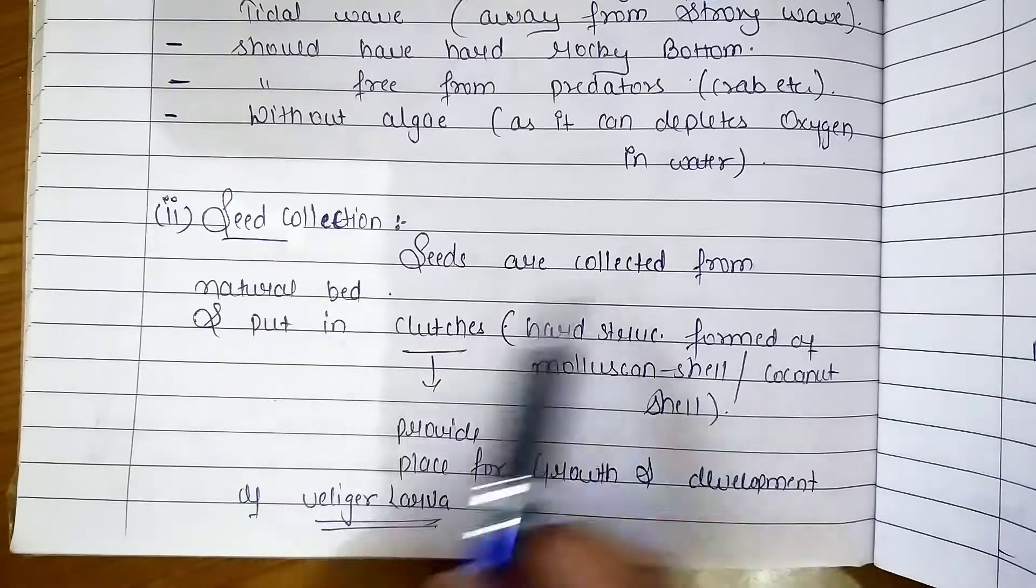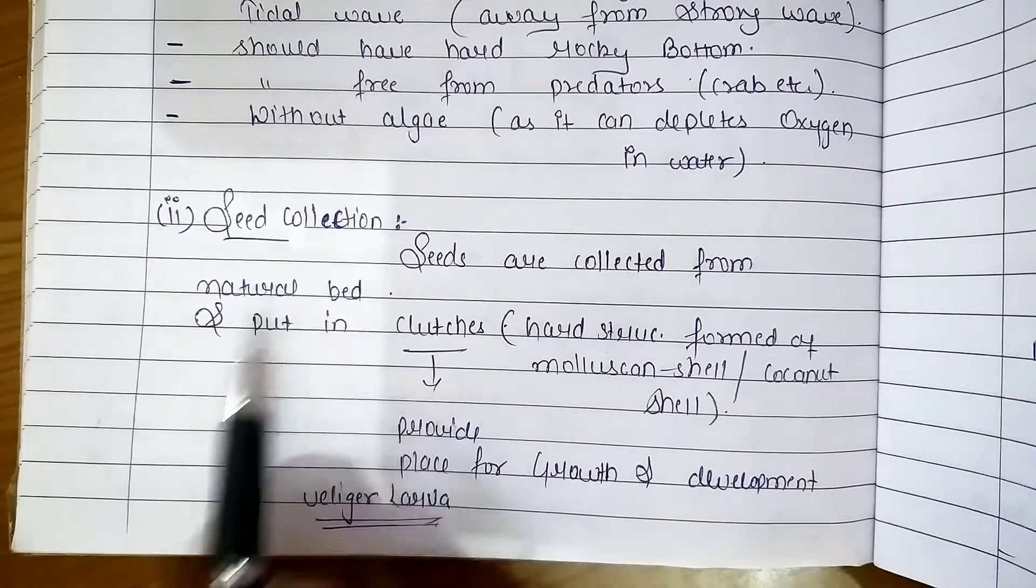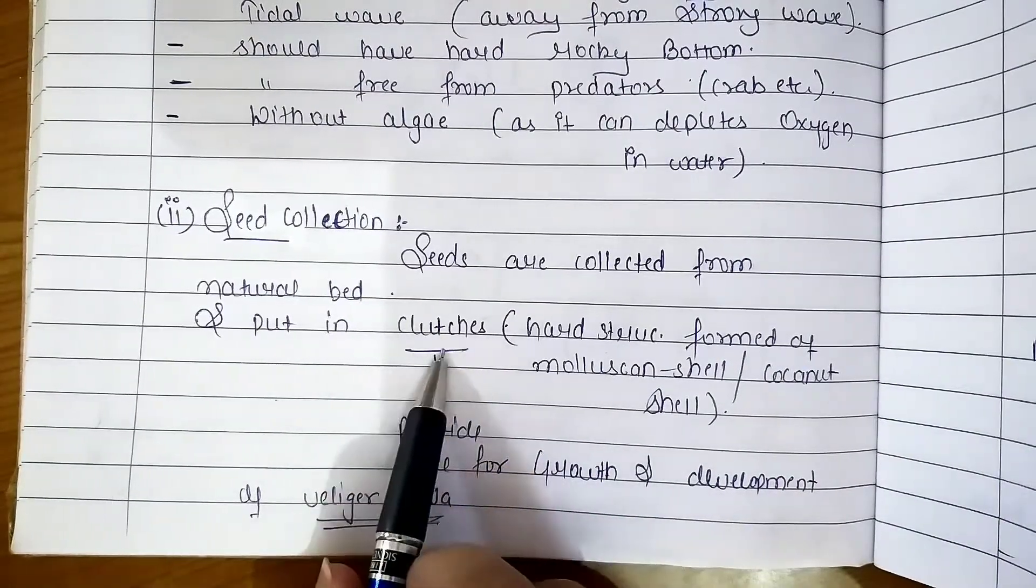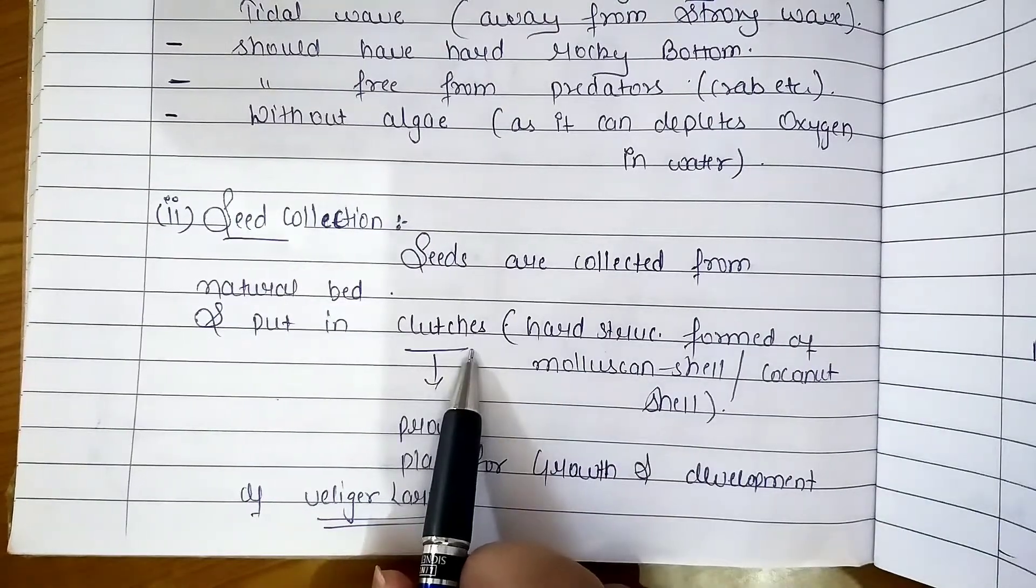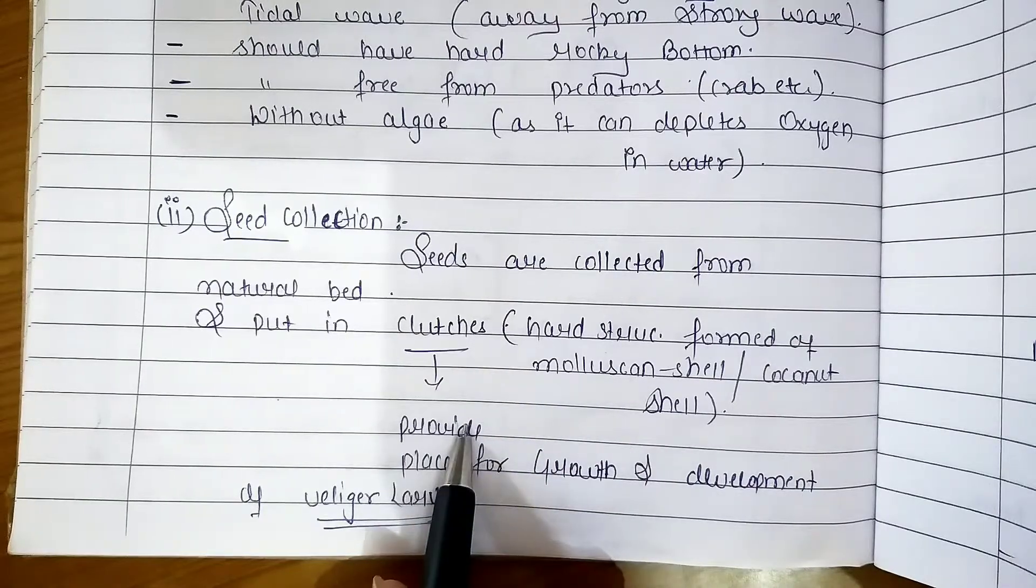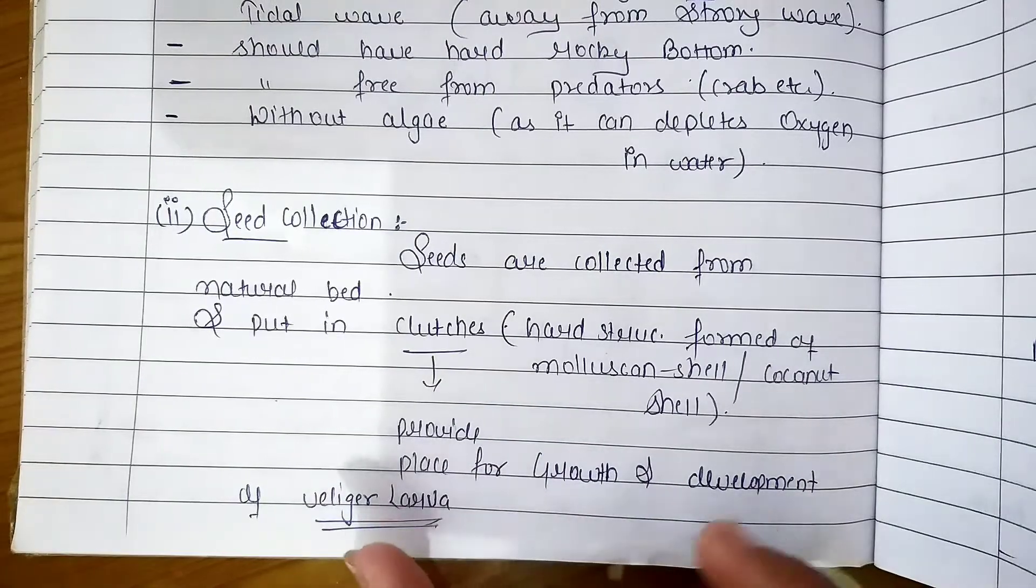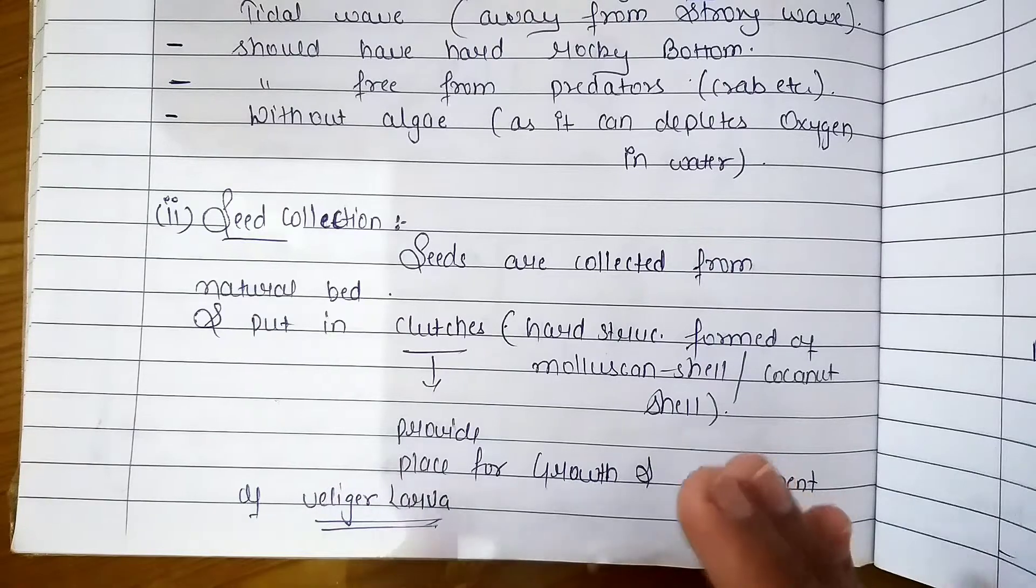We collect them from their natural water body and transfer them into clutches. Clutches are structures in molluscan shell that are a little bigger than larvae. It is converted for proper growth and development.